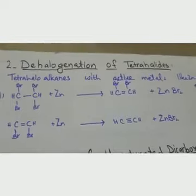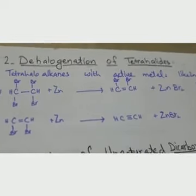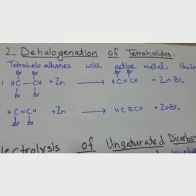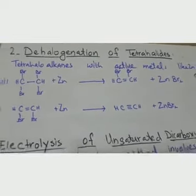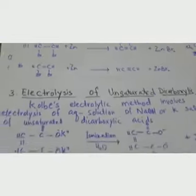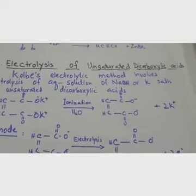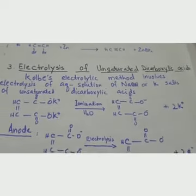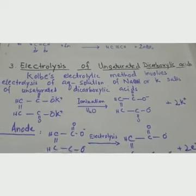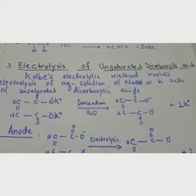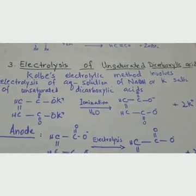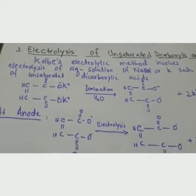This is dehalogenation — removing halogen atoms. The previous method was dehydrohalogenation. The third method is electrolysis of unsaturated dicarboxylic acid — this is Kolbe's method, which we have also studied for alkanes and alkenes.